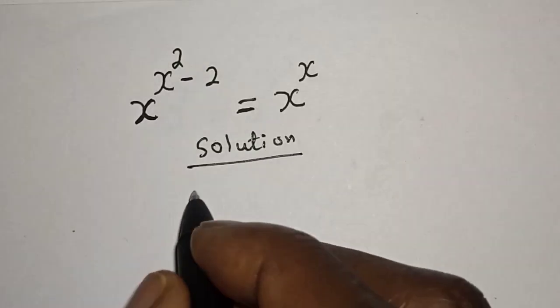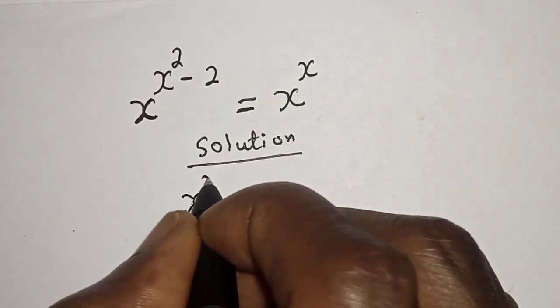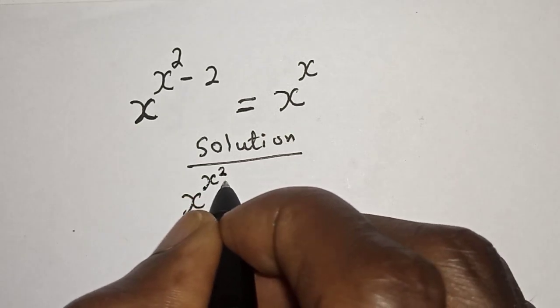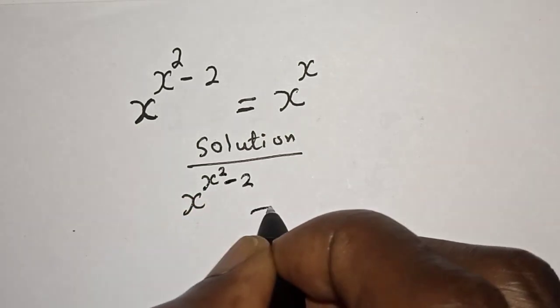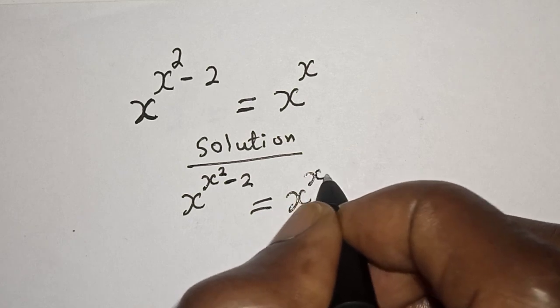Solution. We have the given equation x raised to power x squared minus 2 is equal to x raised to power x.